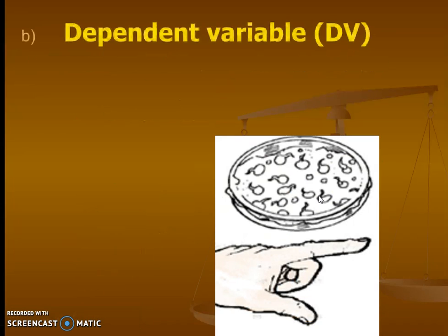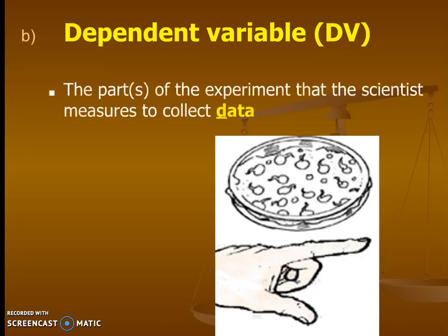The next part of the experiment we have to remember is the dependent variable. The dependent variable is the part of the experiment the scientist measures or collects. It is the data. I love this one because it works out so great. Dependent variable DV data. Well how can I remember that? They both start with D. So data is a key word and even underlining the D in data might help me make that connection. DV data.